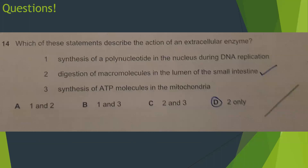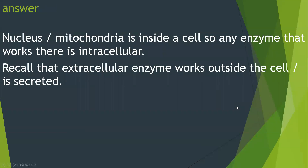Let's answer some questions. Which statement describes the action of an extracellular enzyme? Options: synthesis of a polynucleotide in the nucleus during DNA replication; digestion of macromolecules in the lumen of the small intestine; synthesis of ATP molecules in the mitochondria. Options 1 and 3 are wrong because they involve enzymes working within the nucleus and mitochondria — these are intracellular. The answer is option 2, as digestion in the lumen of the small intestine involves secreted, extracellular enzymes.